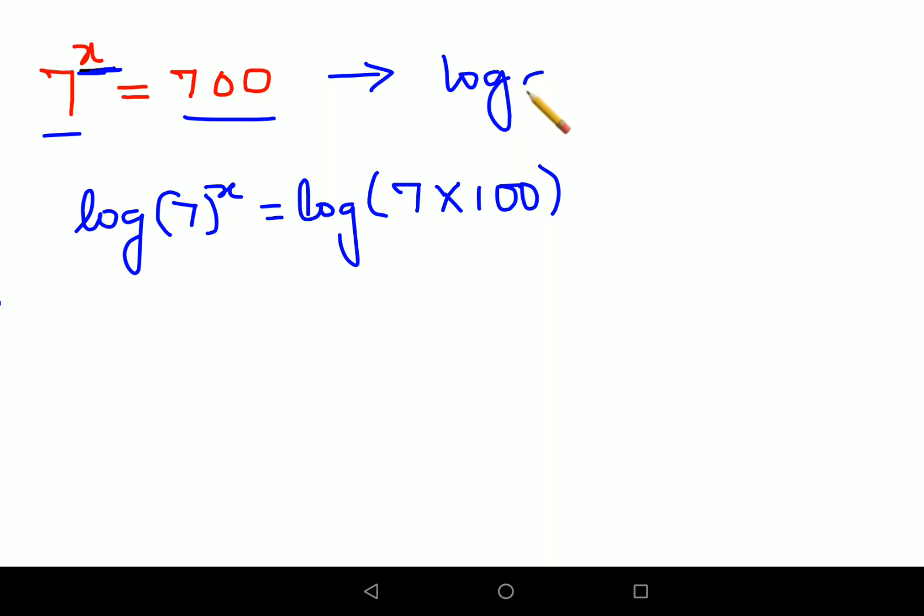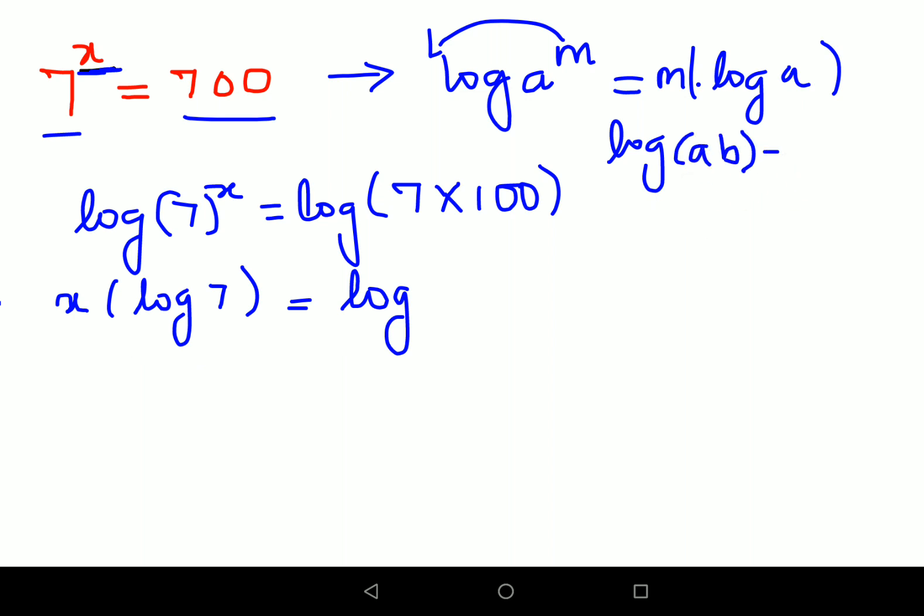Now we'll start applying the laws of logs. When you have log of a raised to m, the index goes ahead, so you will have m into log of a. Similarly here, I can say x into log of 7 equals to, now when you have a log as a product, when you have log of a times b, it can be written as log a plus log b. So similarly, 7 into 100 can be written as log of 7 plus log of 100.